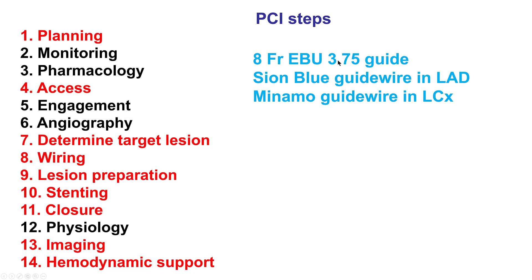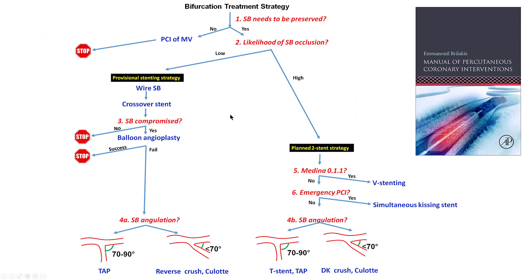We engaged the left main with an EBU 3.75 and used workhorse wires. The question of which technique to use for the bifurcations depends on the anatomy. For the left main bifurcation, the side branch needs to be preserved and there was significant likelihood of occlusion, since the left main, LAD, and circumflex all had lesions — this requires a two-stent strategy. DK Crush is the most commonly performed technique at our laboratory and was chosen for this case, as well as for the LAD-diagonal bifurcation. For the circumflex lesion, we decided to use provisional stenting.